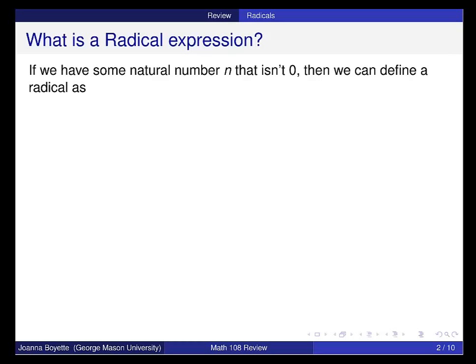If we have a radical number that is not 0, and that's n, then we can define, and you guys probably remember radicals as something that looks like this, the nth root of a. This is called the index, and this is called the radicand.